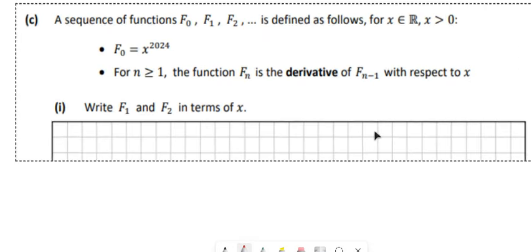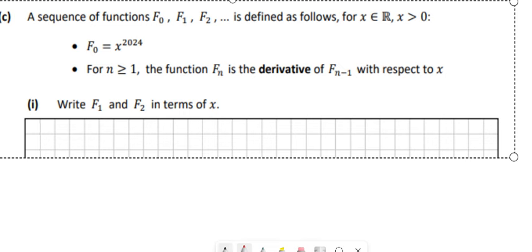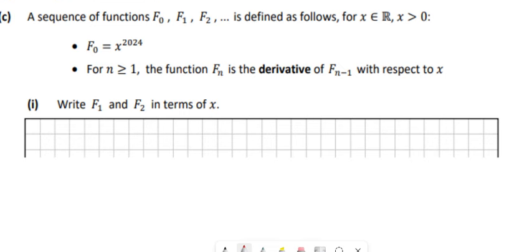Right, last part then. The first part is just getting what F1 and F2 is. So F1 is just where we differentiate that. F0 is equal to... F1 is equal to X to the power of 2024. So if I differentiate that, I'm just going to do 2024 multiplied by the 1 that's there in front of the X, so 2024 X to the power of 2023, and the power just drops down by 1. So that's what F1 would be.